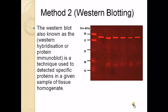Method 2: western blotting, also known as western hybridization or protein immunoblot. It is a technique used to detect specific proteins in a given sample of tissue homogenate. Gel electrophoresis is used in this process with native proteins by 3D structure or denatured proteins by the length of the polypeptide. The proteins are then transferred onto a nylon or nitrocellulose membrane, which is then probed with labeled antibodies specific to the target protein.